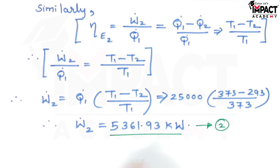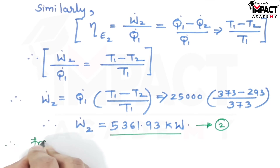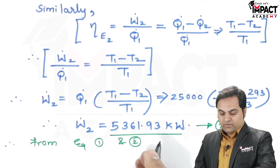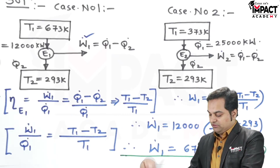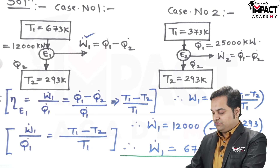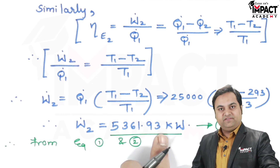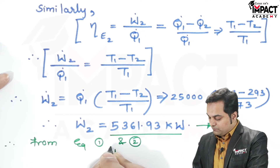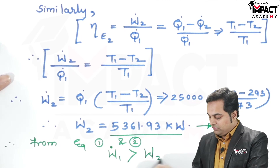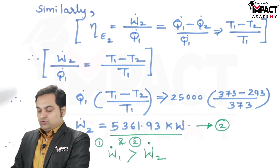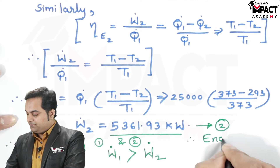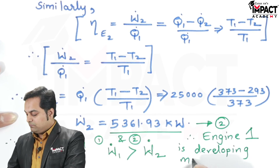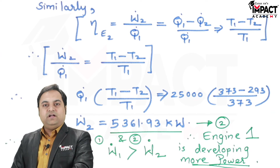From equations 1 and 2, we can see that W1 dot has a value of 6,775.63 kilowatts and W2 dot has a lesser value of 5,361.93 kilowatts. Therefore W1 dot is greater than W2 dot, which means engine 1 is developing more power. That is our answer.